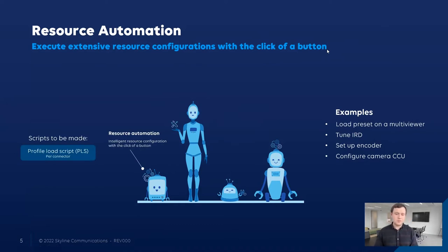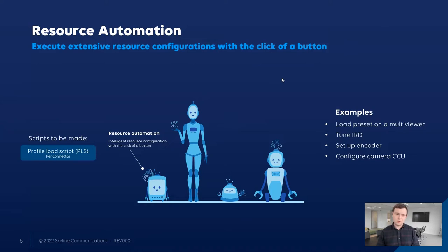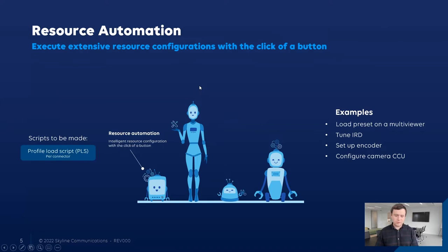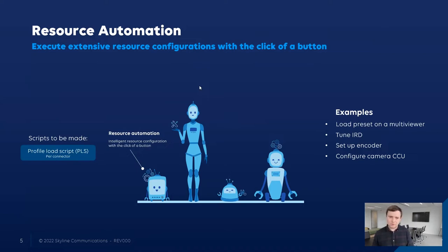Our second use case is resource automation. Resource automation can be used to execute large resource configurations in an intelligent way with just a click of a button. This is done with the profile load scripts in DataMiner. A profile load script translates a profile — essentially a preset for a device listing which parameters should be set in which way — into a sequence of parameter sets on the DataMiner connector for a certain resource. You will need to define such a profile load script for every connector you use to connect to your resources. With a single click, you can do a very large configuration — for example, loading a preset on a multiviewer, tuning an IRD, or setting up an encoder.